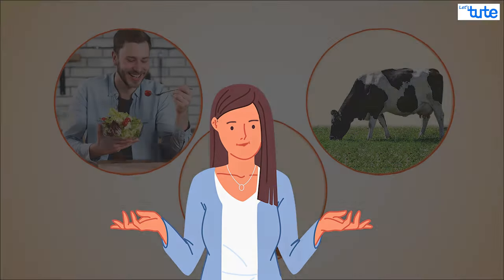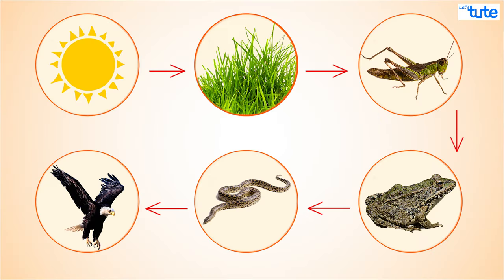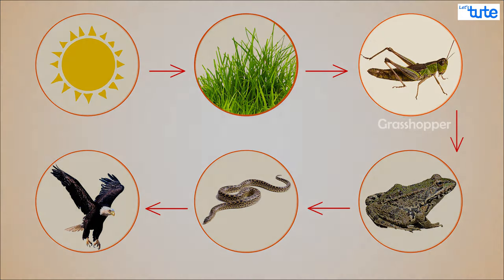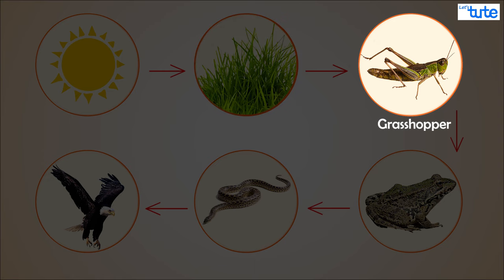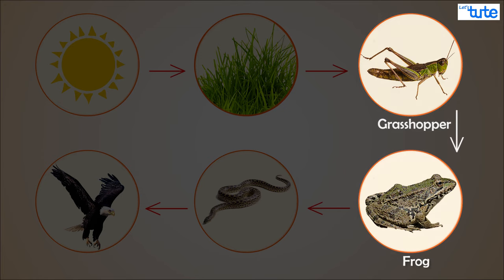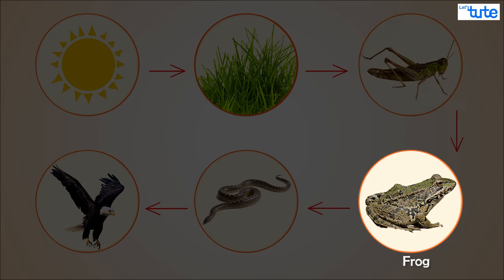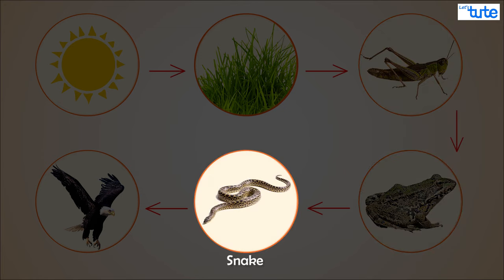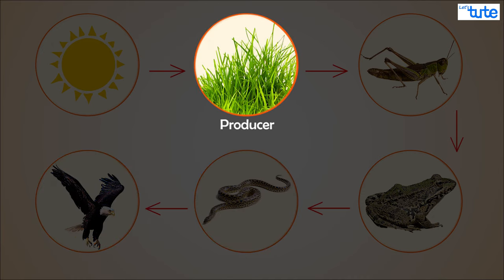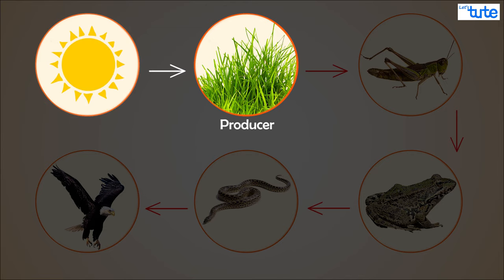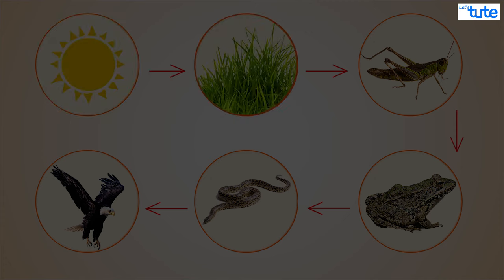Consider this: a grasshopper feeds on, or depends on, the grass to obtain its food. This grasshopper is in turn eaten by the frog, the frog is eaten by the snake, and the snake is eaten by the eagle. Here the grass is a producer — it obtains energy from the sun to produce its own food.